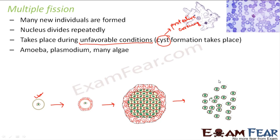The two major differences between binary fission and multiple fission are: first, in binary fission two new individuals are formed, whereas in multiple fission many new individuals are formed; second, binary fission happens under favorable conditions, while multiple fission happens under unfavorable conditions. That was all about fission.